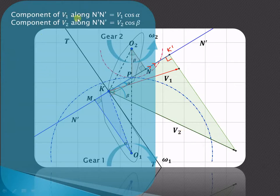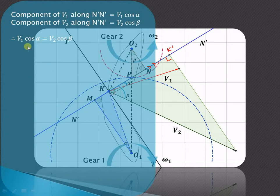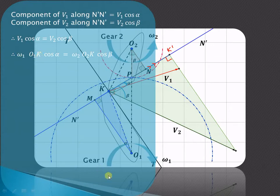The component of velocity V1 along N'N' is V1 cos alpha, and the component of V2 along N'N' is V2 cos beta. To have proper contact or proper rolling motion, these two components must be equal, so V1 cos alpha = V2 cos beta. Since V = R·ω, V1 equals O1K·ω1 and V2 equals O2K·ω2, giving: O1K·ω1·cos alpha = O2K·ω2·cos beta.